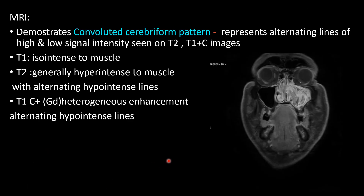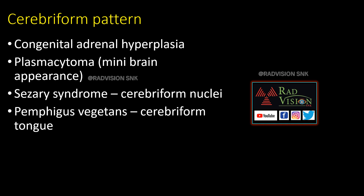On MRI, the lesion is iso-intense to muscle on T1-weighted images. It demonstrates a convoluted cerebriform pattern representing alternating lines of high and low signal, seen on T2 and T1 post-contrast images. The term cerebriform pattern is also used in congenital adrenal hyperplasia, plasmacytoma (mini brain appearance), Cesarian syndrome (cerebriform nuclei), and pemphigus vegetans (cerebriform tongue).